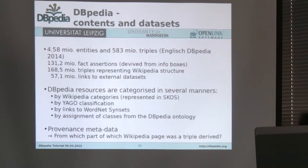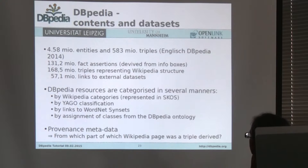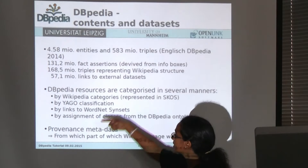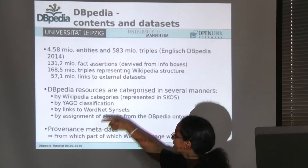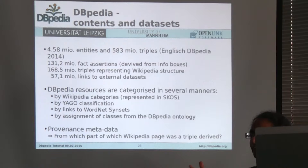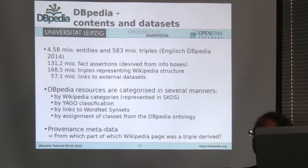DBpedia has around more than 5 million entities and more than one billion triples just in the English version. It has Wikipedia categories and is linked to other datasets such as YAGO — which combines Wikipedia information with WordNet. I think these resources are very useful for NLP tasks. Wikipedia represents a major intersection between the Semantic Web and NLP communities, providing resources that can be used in NLP tasks.